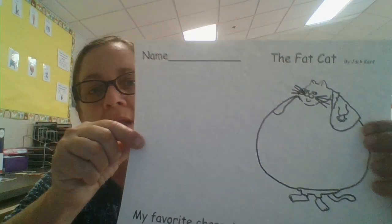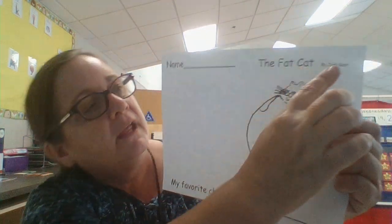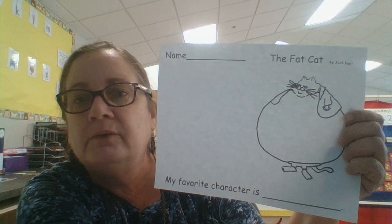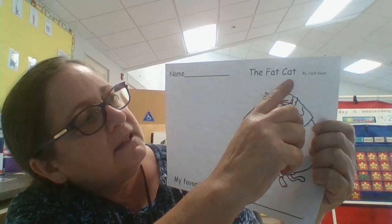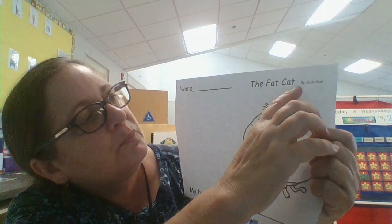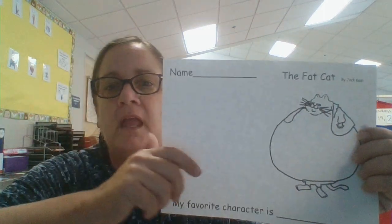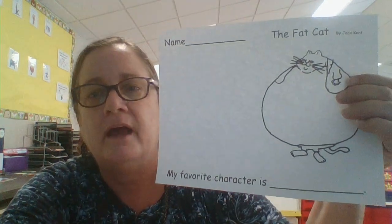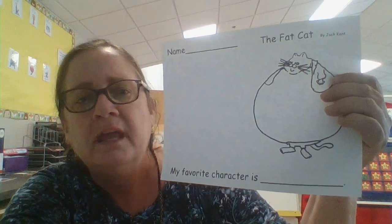Now, for your work today — for your independent work — your job is to get out the picture of the fat cat. Your paper is going to be in your language arts folder and it's going to look like this. There's room to write your name right here, or you can have your mom and dad write your name for you. Here it says "The Fat Cat" — that's the title of the story. Remember, fat and cat rhyme. And it says "by Jack Kent." So what your job is to do after you write your name is to decide which character you like the best.